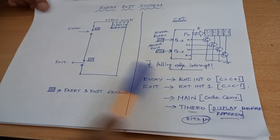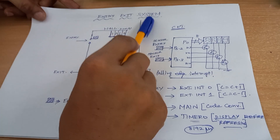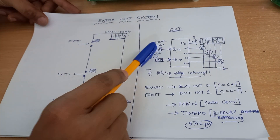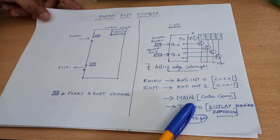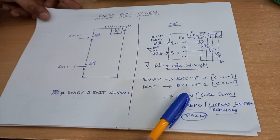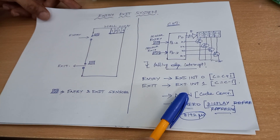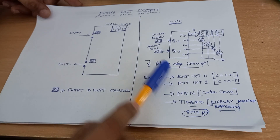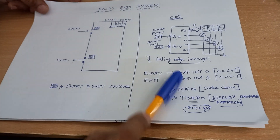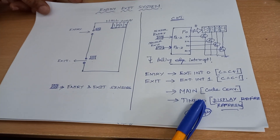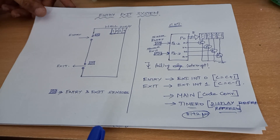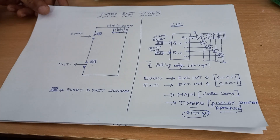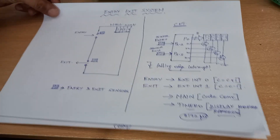For this entry-exit system, 2 external interrupts and 1 timer interrupt and 1 main routine are being used. So, 1 main routine and 3 interrupt service routines are being used in this particular entry-exit system application.